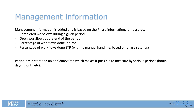For management information, the system provides a period view counting: the number of open workflows at the beginning of the period, the number started during the period, and the number open at the end. The difference between those gives the number of workflows finished. We've also added an STP indication — whether a workflow was completed fully straight-through without any manual handling — which is useful for reporting and identifying where STP levels are lower than expected.